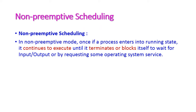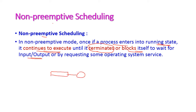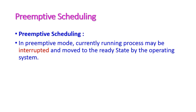Non-preemptive scheduling means once a process enters the running state, it continues its execution until it terminates — that is, the process completes or blocks itself waiting for an IO request. This is called non-preemptive scheduling because once the process enters the CPU, it continues execution without any disturbance.